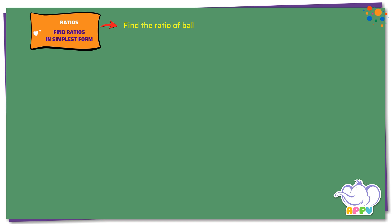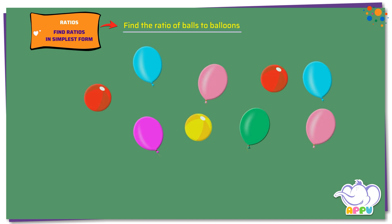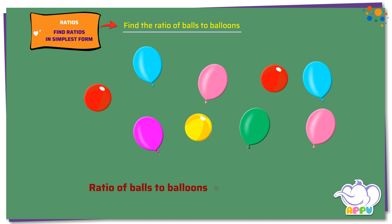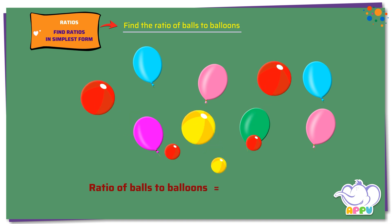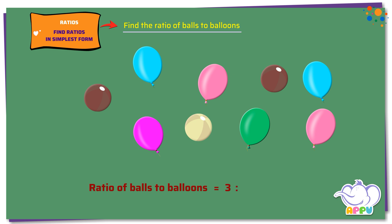Find the ratio of balls to balloons. We see that there are three balls and six balloons. The ratio of the number of balls to the number of balloons is three is to six.